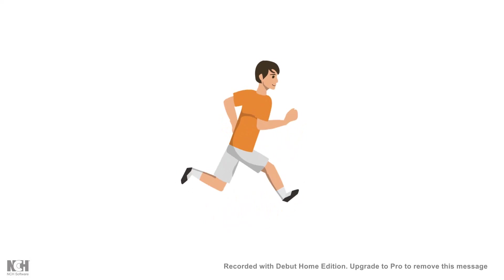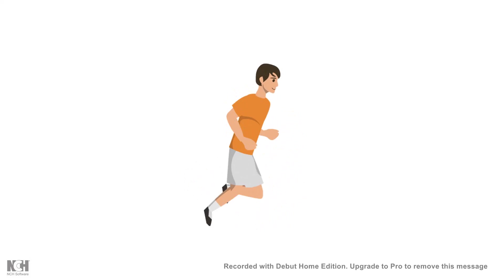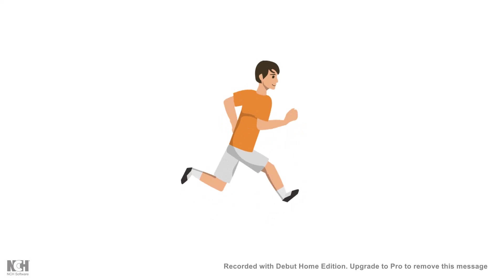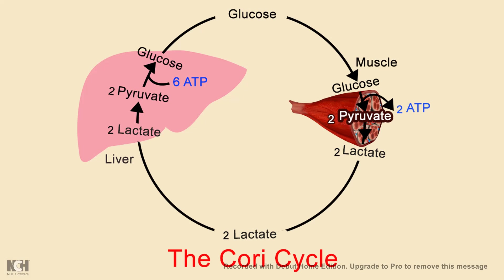If you are sprinting, initially glycolysis would produce the energy, but after a point of time the blood supply is not enough to give enough oxygen to your muscles. So how would you run then? In that situation we have to understand the Cori cycle. Glucose ultimately gets converted to pyruvate and produces energy initially at the beginning of the sprint or intense exercise, but eventually that pyruvate is converted into lactate, which replenishes NAD+ so that the glycolytic pathway can at least occur in the muscle and provide enough ATP.